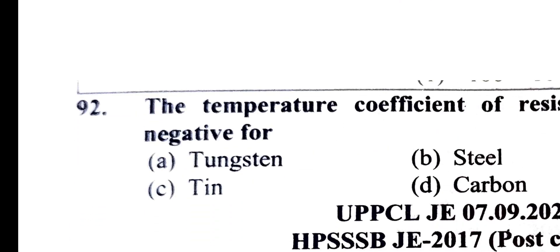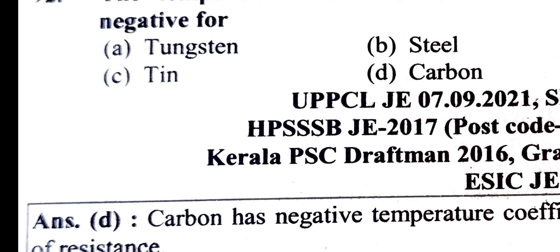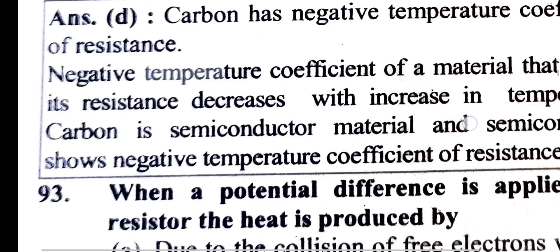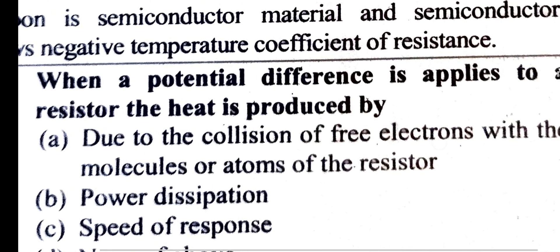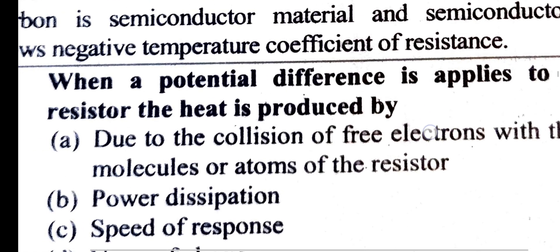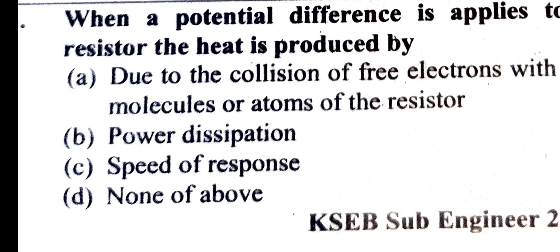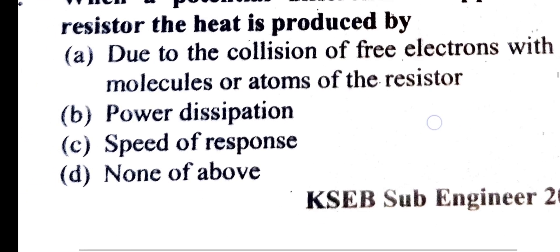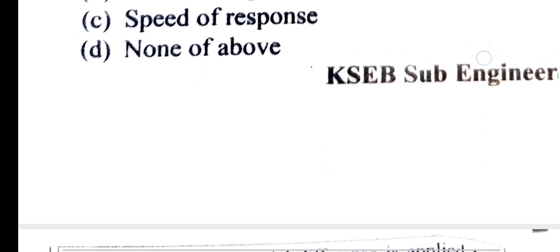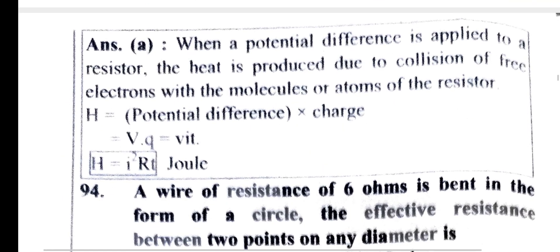The temperature coefficient of resistance being negative means the material is carbon, for example — relevant for PSE exam checks. When a potential difference is applied to a resistor, heat is produced due to collision of free electrons with the molecules or atoms of the resistor. The formula is H equals I²RT.